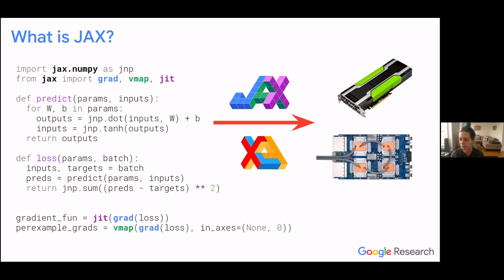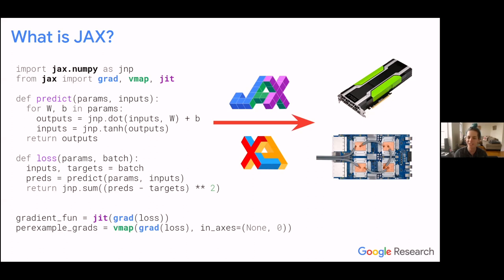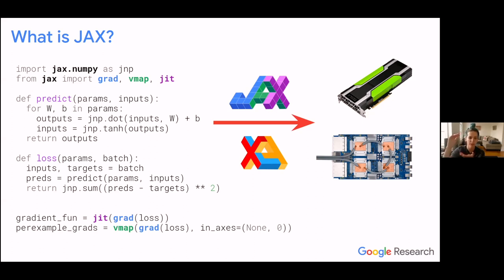Would you apply JIT to primitive functions or end-to-end, like matrix multiplication versus full policy gradient updates? Usually you want to JIT as big a block as you can to give XLA as much to work with as possible. It's very common to JIT the entire training step and then drive that from a Python while or for loop. Occasionally people even JIT the entire training loop, but that can sometimes get more complicated due to control flow constraints.